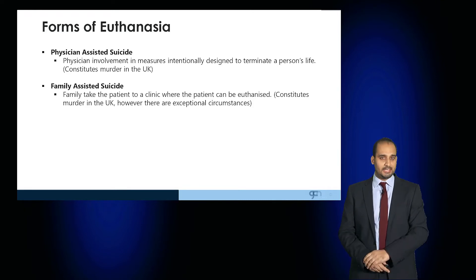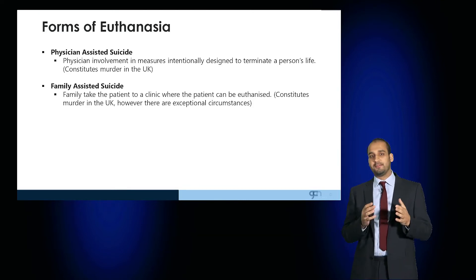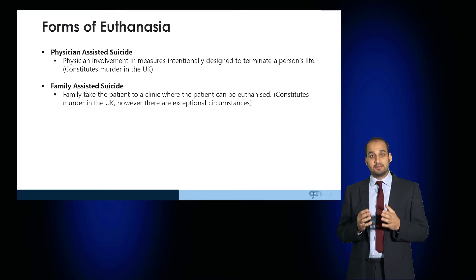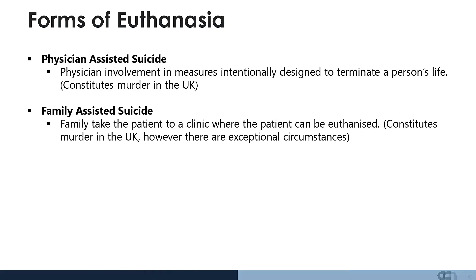There are two forms of euthanasia. Physician-assisted suicide is where the physician is involved in measures intentionally designed to terminate a patient's life, and this constitutes murder in the United Kingdom. Family-assisted suicide is when the family take the patient to a clinic where the patient can be euthanised, and this also constitutes murder in the UK, but there are some exceptional circumstances.